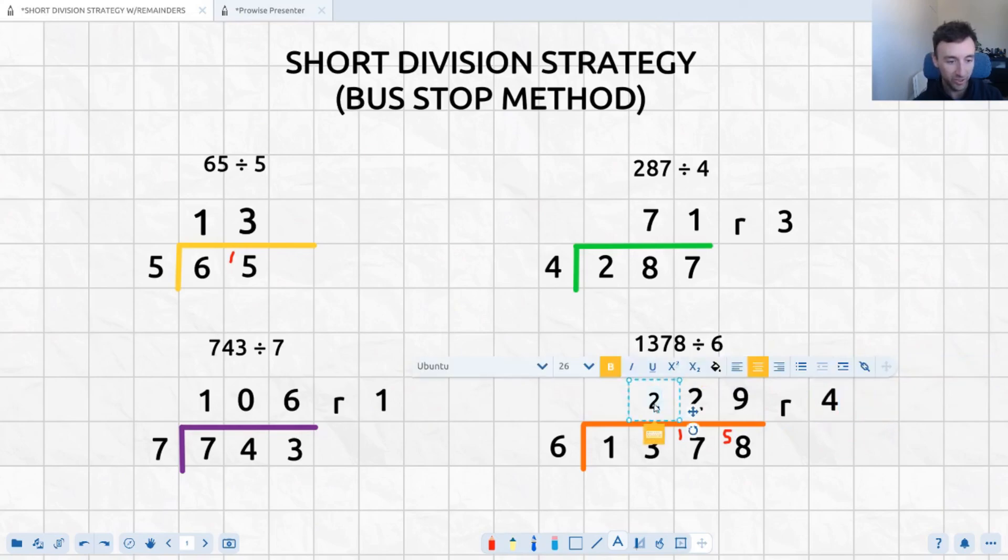Now I'm just going to fix up this little tiny 2 because for some reason it wants to be a bit smaller than all the others. We don't want it to look too out of place. I think it might be a 36. So 229 remainder 4.